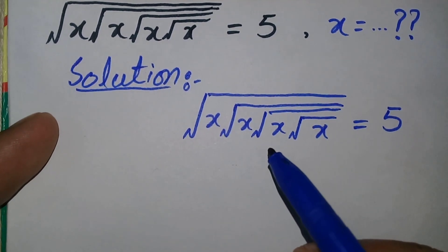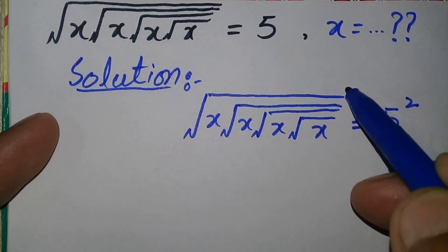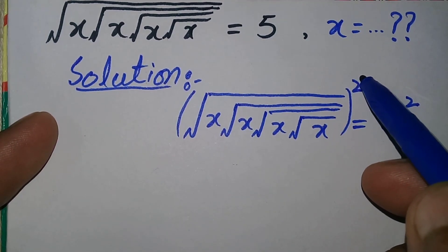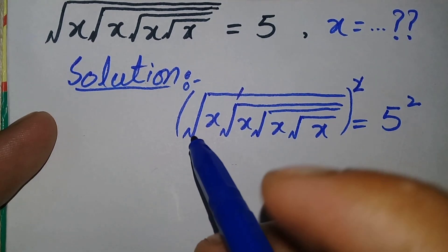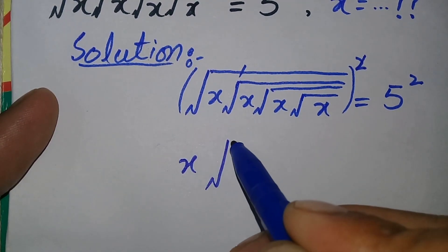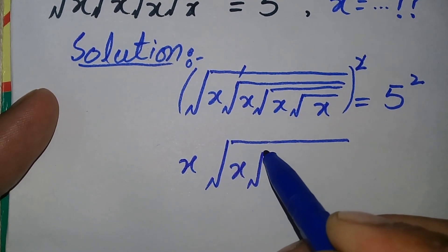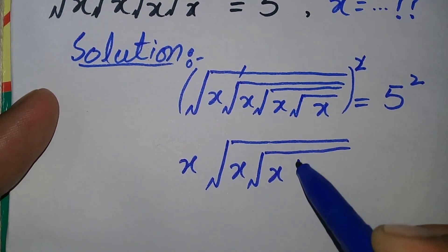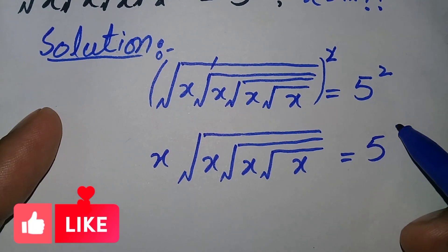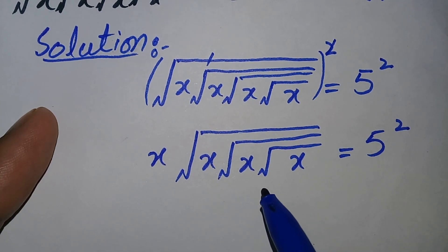In the next step we will take the square on both sides. Taking square on both sides: 5 raised to power 2, and squaring this side. This square and this square root will cancel each other, so only x times square root of x times square root of x times square root of x is equal to 5 raised to power 2 on the right side.